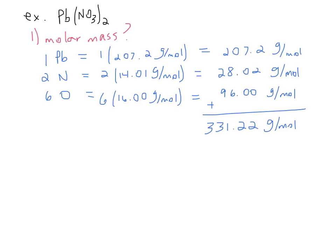Here is the molar mass of Pb(NO3)2, lead(II) nitrate. There's only one PB, and its molar mass on the periodic table is 207.2 grams per mole, so 1 times 207.2 is 207.2 grams per mole. For N, the key is to distribute, just like we do in math class. There's one N in NO3, but there are two NO3 groups total, so you have two N's. Two times 14.01 grams per mole gives you 28.02 grams per mole.